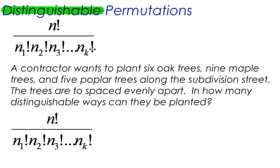If I have a distinguishable permutation, the n factorial on the top represents the total number of objects that you have. So right here, this one is the total objects.